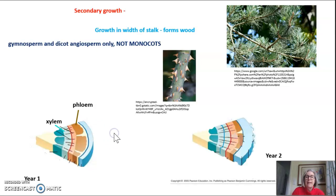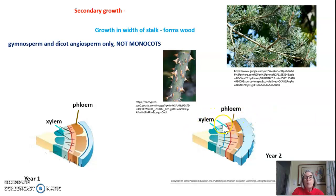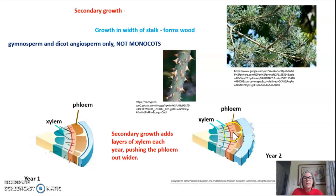Let's look at year two. In year two, we would still see the bark, and just inside of the bark would be the phloem, so sap can still leak out of the bark. On the inside is the xylem, but now we have two layers of xylem — a new layer of xylem forms every year. The old layer of xylem then gets dried up and begins to form what we call the heartwood of the plant. The newest layer of xylem is the only active layer transporting water from the roots to the shoots. There's no growth in the phloem; the phloem just keeps getting moved out. So secondary growth adds layers of xylem each year, pushing the phloem out wider and forming the wood towards the interior of the plant.